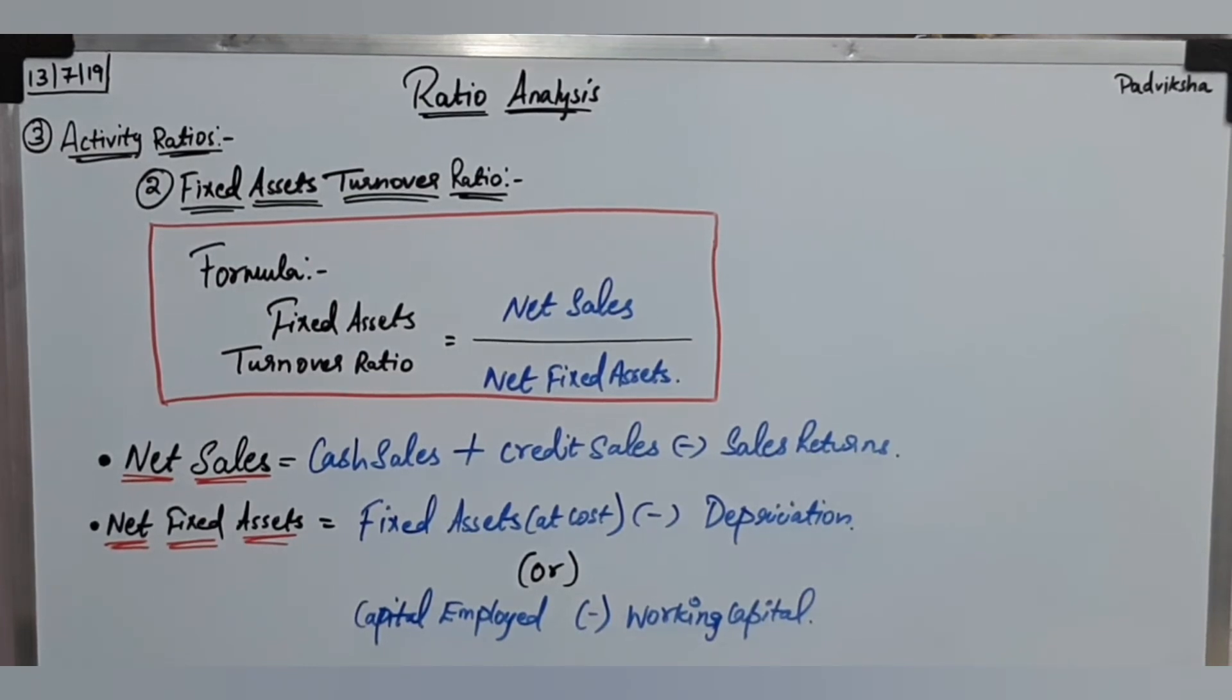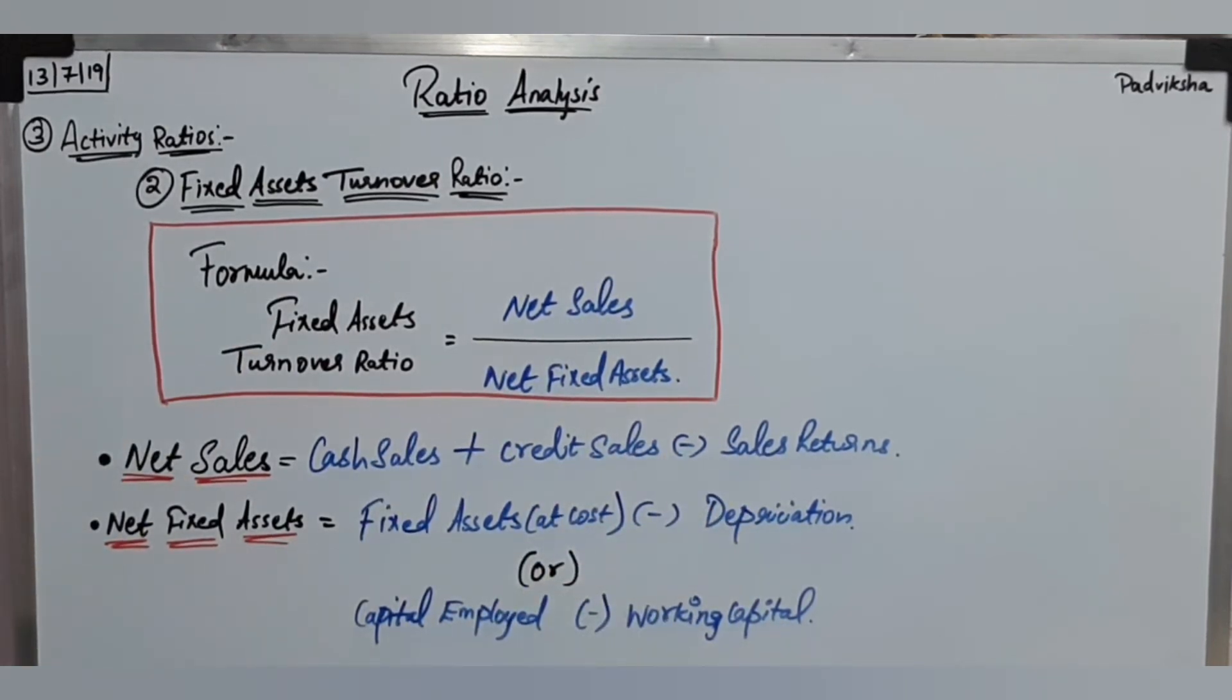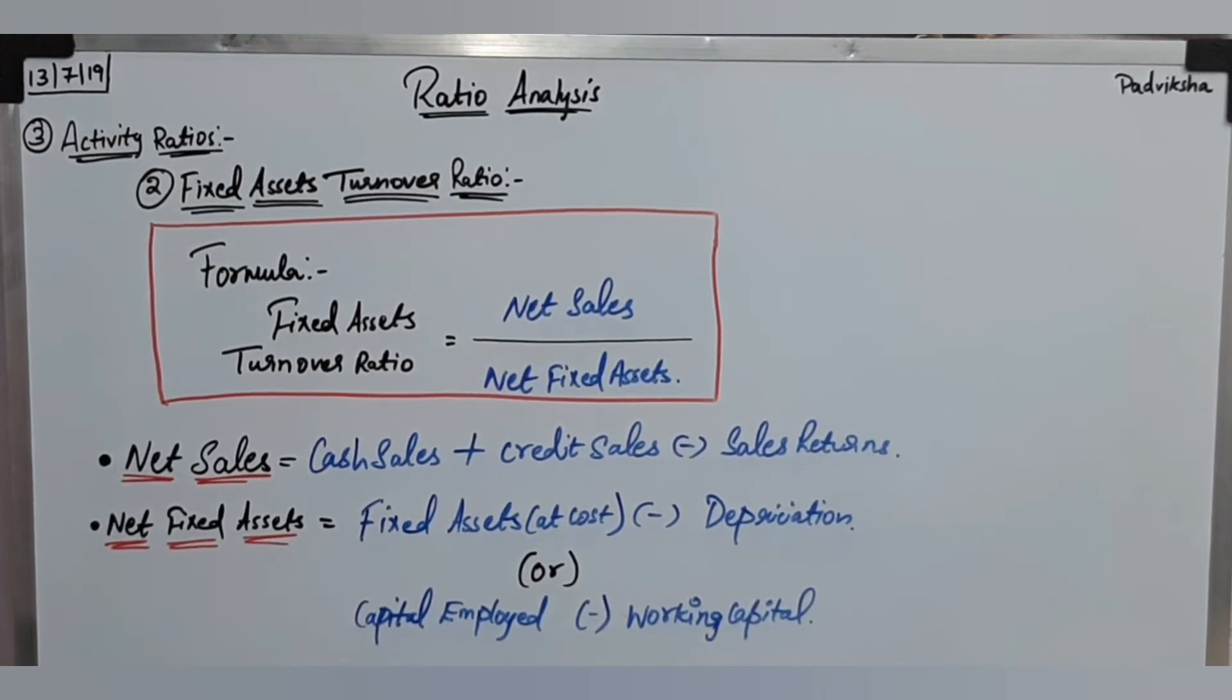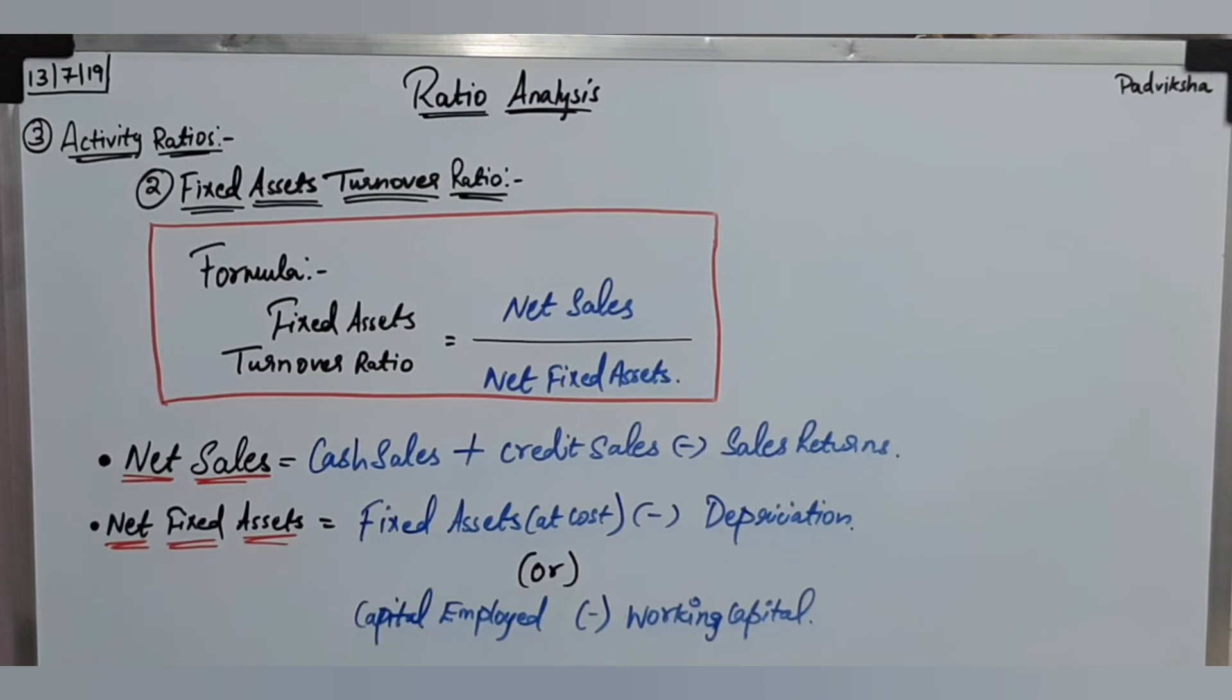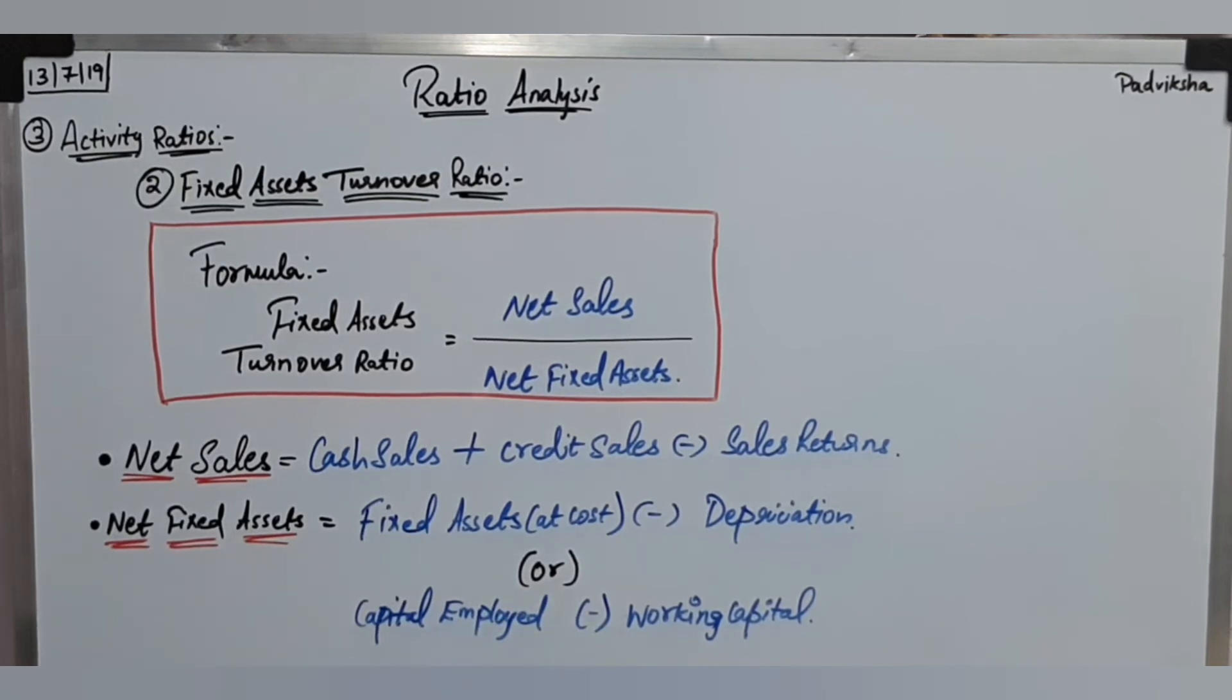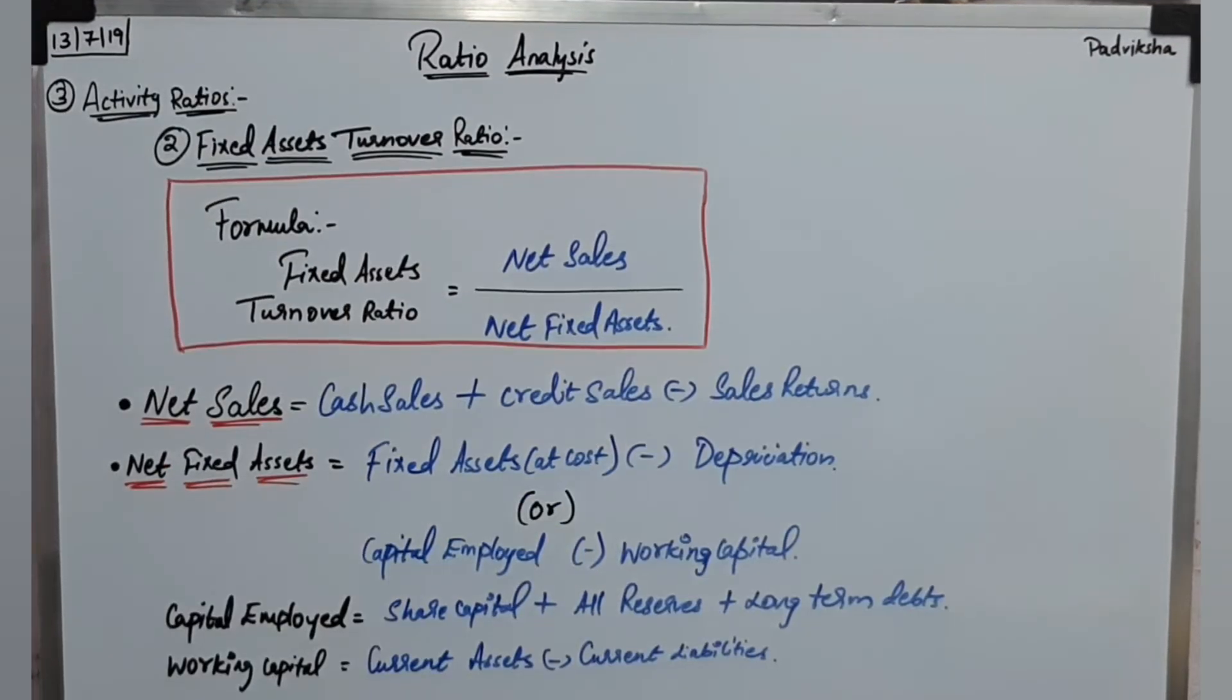Net fixed assets - there is one situation we will calculate the net fixed assets. First situation is the balance sheet fixed assets cost minus depreciation of fixed assets equals net fixed assets. If we do not have any depreciation and all, we can use capital employed minus working capital.